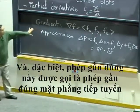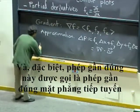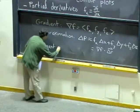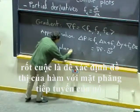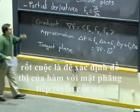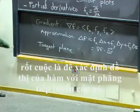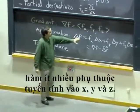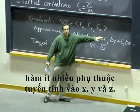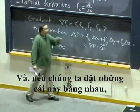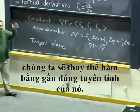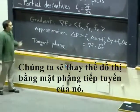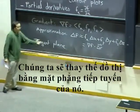This approximation is called the tangent plane approximation because it amounts to identifying the graph of a function with its tangent plane. It means that we assume that the function depends more or less linearly on x, y, z. If we set these things equal, what we get is actually replacing the function by its linear approximation — we are replacing the graph by its tangent plane.